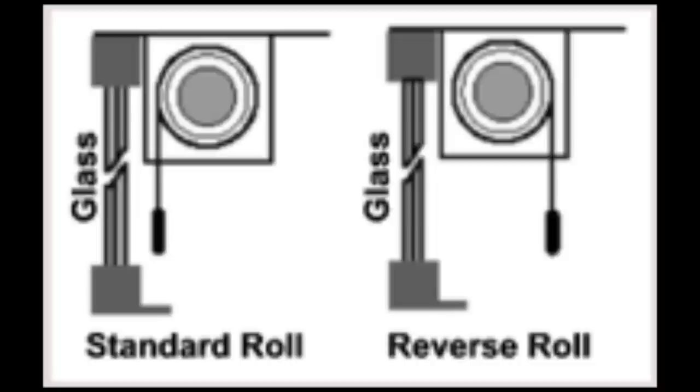Rollaway window screens are available in two configurations: standard or regular roll, which rolls next to the glass, or reverse roll, which rolls forward, away from the glass.